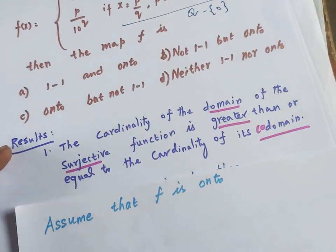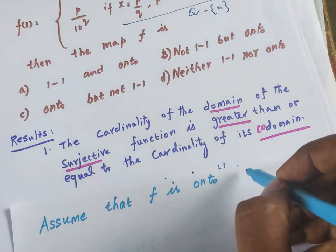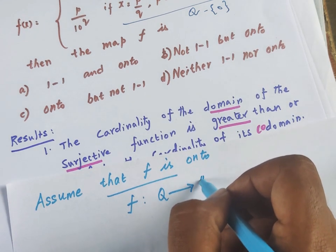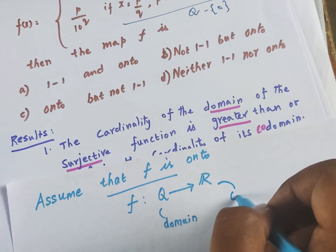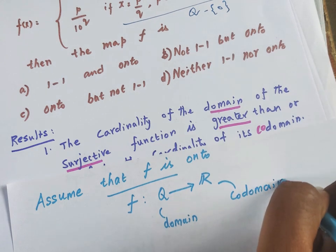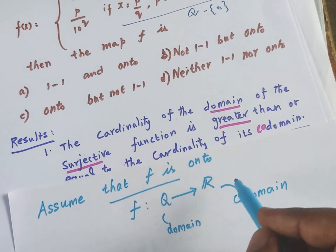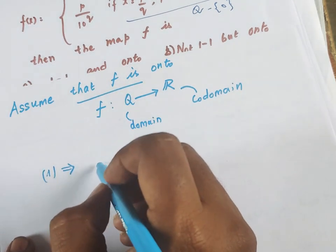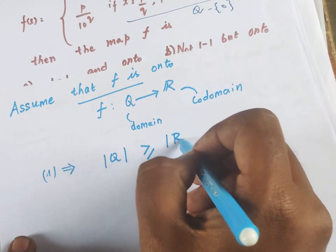Using the first result: the cardinality of the domain of a surjective function is greater than or equal to the cardinality of its co-domain. In our function f, Q maps to R. So Q is the domain and R is the co-domain. If f were onto, then the cardinality of Q would be greater than or equal to the cardinality of R.